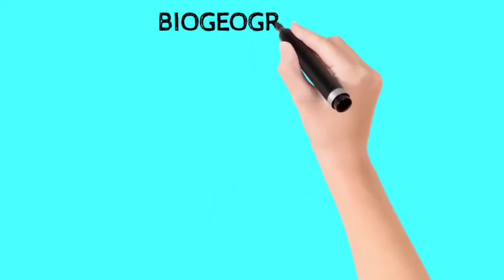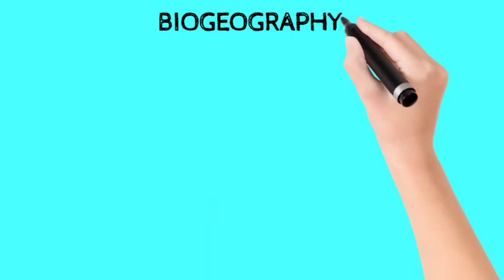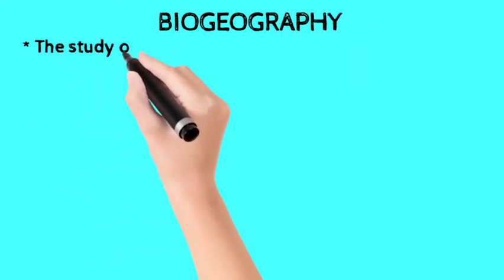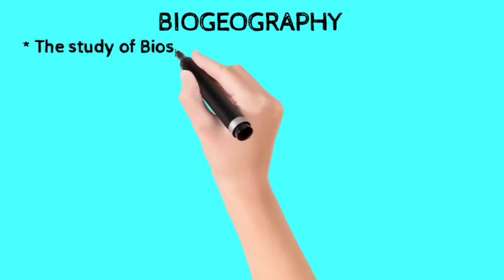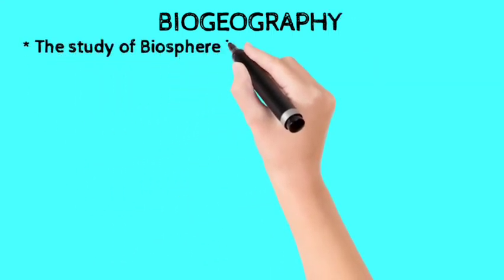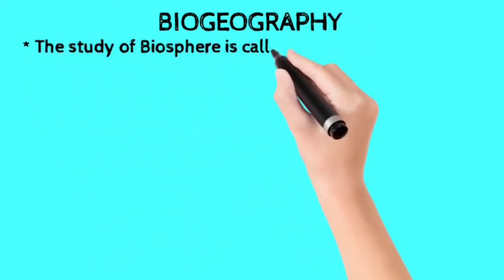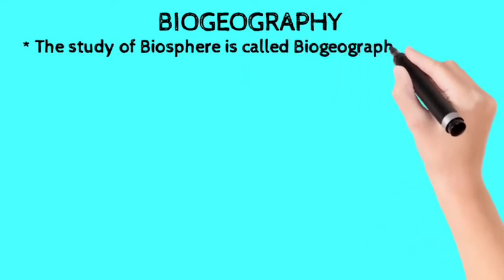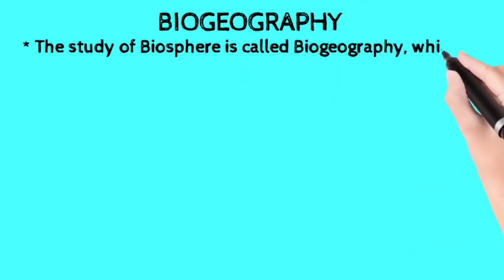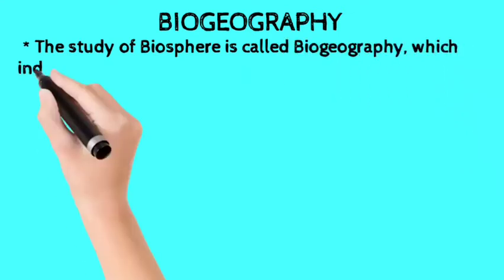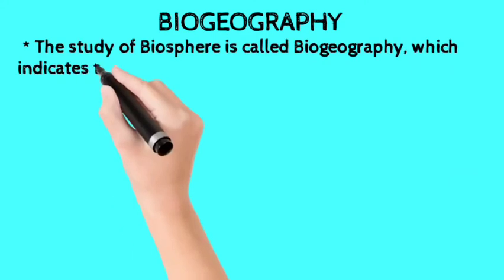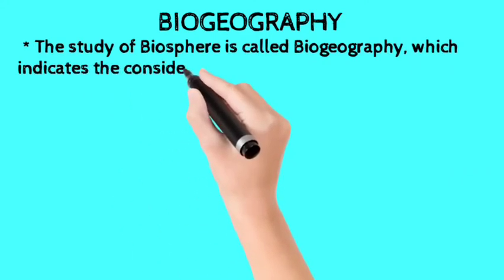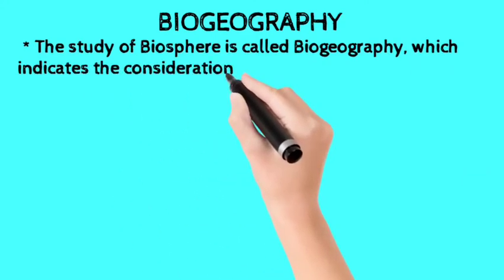Hello friends, welcome to my YouTube channel. Today I want to explain briefly the meaning and scope of biogeography. Bio means living beings, geography means description of the earth's surface. The study of the biosphere is called biogeography.